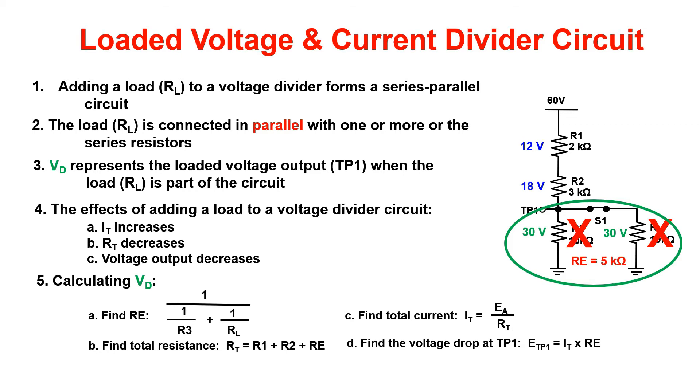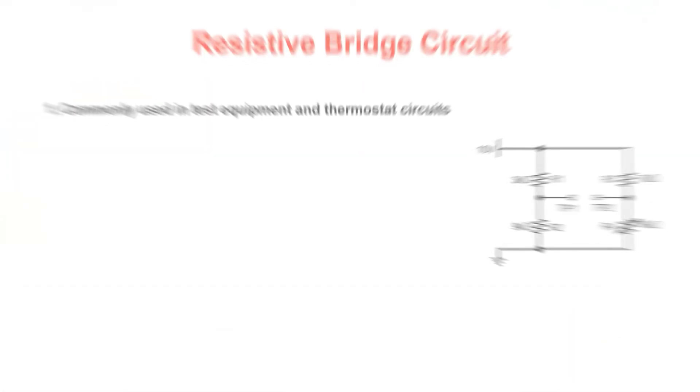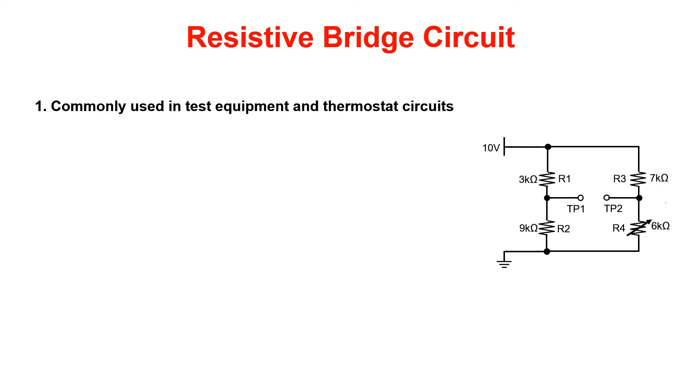Now to move on to resistive bridge circuits. Resistive bridge circuits are commonly used in test equipment and thermostat circuits. They are comprised of two voltage dividers connected in parallel. Resistive bridge circuits are used to compare a known value to an unknown value.